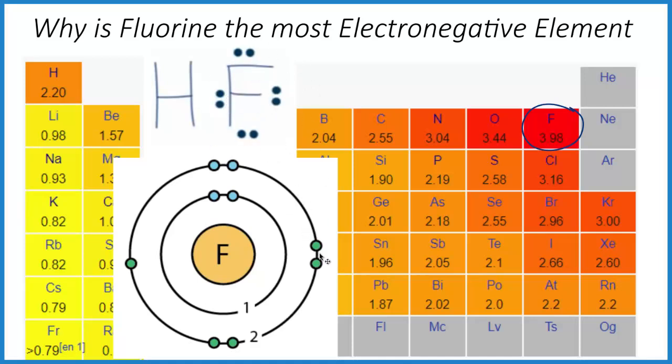So part of the reason is fluorine, it's pretty small. That positive charge can pull those shared electrons towards it. But hydrogen in this case, it's pretty small too. So there's one other factor we need to consider.